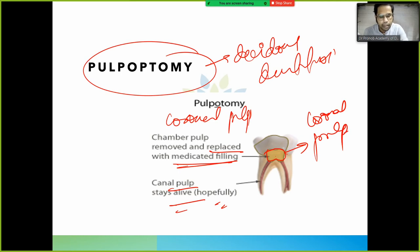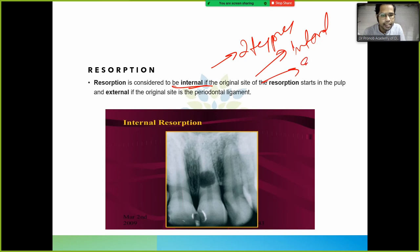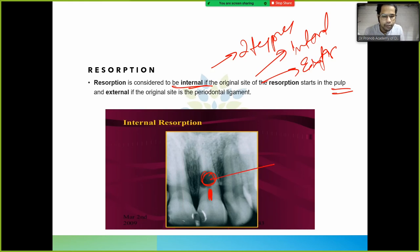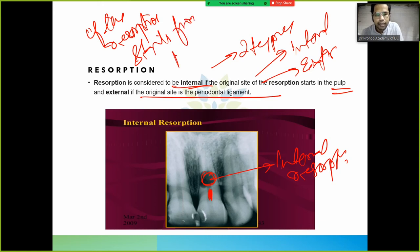There are two types of resorption. Internal resorption is when the original site of resorption starts in the pulp. External resorption is when the original site is the periodontal ligament — if resorption starts from the periodontal ligament, it is called external resorption.